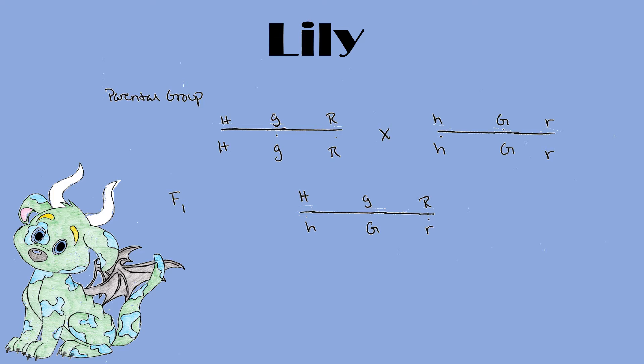Since they're both homozygous, you only get one gamete type for each allele, ending up with Lily's genotype.